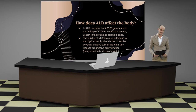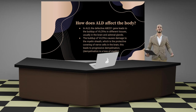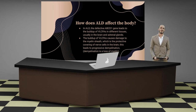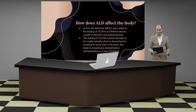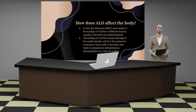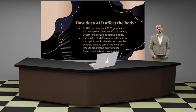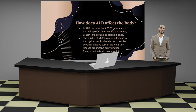In ALD, the defective ABCD1 gene leads to the buildup of VLCFAs in different tissues, usually in the brain and adrenal glands. The buildup of VLCFAs causes damage to the myelin sheath, which is the protective covering of nerve cells in the brain. This leads to progressive demyelination, which is a loss of myelin.